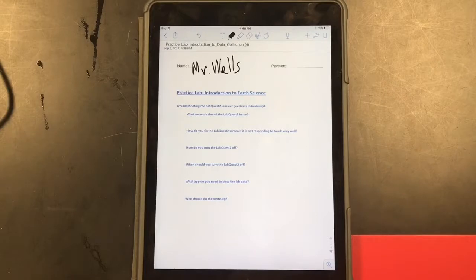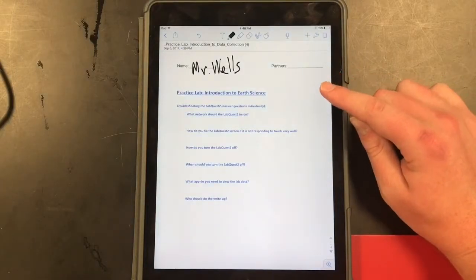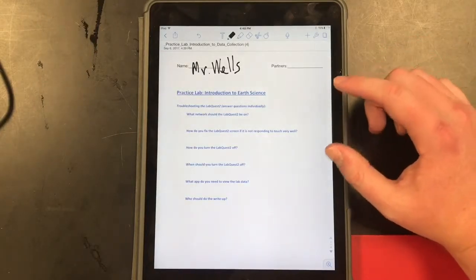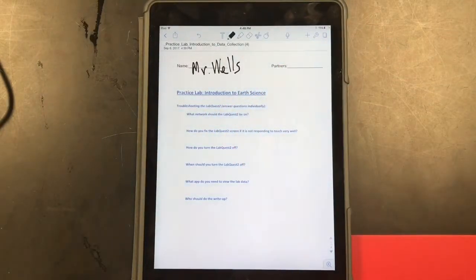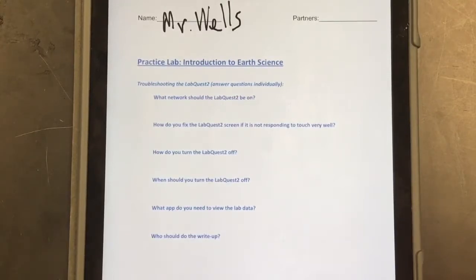Before we actually start the lab, we can actually answer most of the questions on this first page. The first and most important thing to do when you start a lab is to write your name. Mr. Wells, I don't have any partners. I'm working here by myself. But make sure to put your name and also your partner's names. Everyone is going to have to fill out a lab sheet. Everything in here can be done using the pencil, so you can pencil in all your answers here. Or you can type them if you want them to be neat or if that's easier for you. So we can actually answer the first few questions here. What network should the LabQuest 2 device be on? We talked about that. That should be on 192 secure.